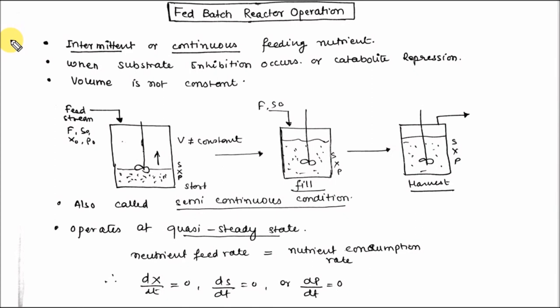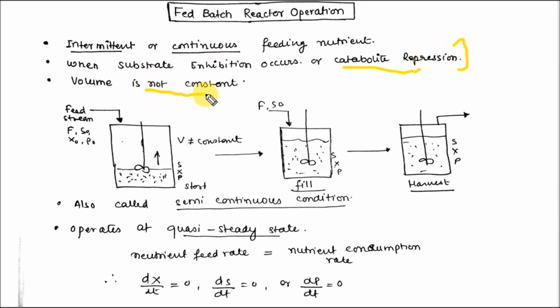In fed batch operation, there is intermittent or continuous feeding of nutrients. When there is a substrate inhibition process or catabolite repression process, fed batch reactor operation is required. Volume is not constant — as you feed the stream, the volume continuously increases.